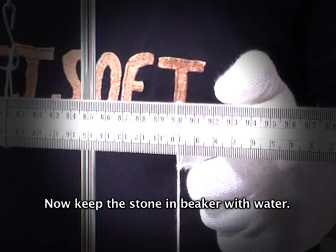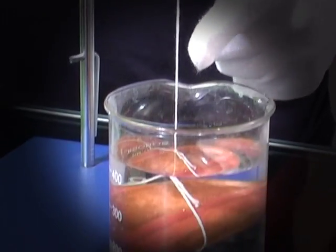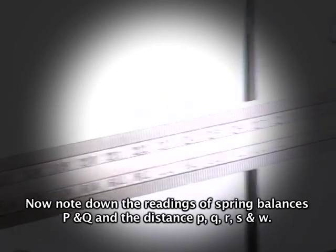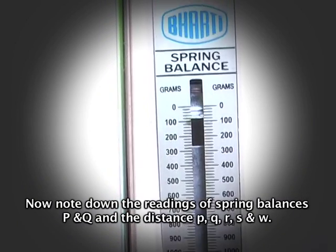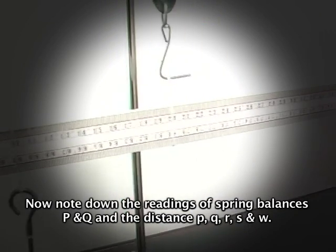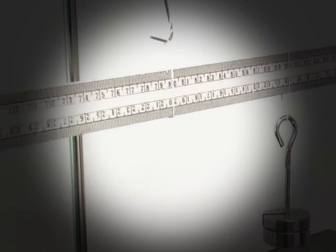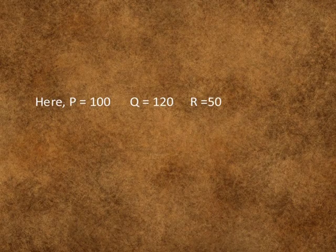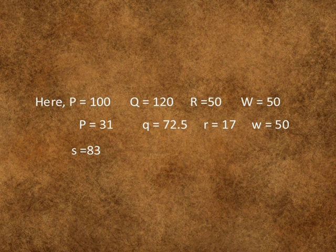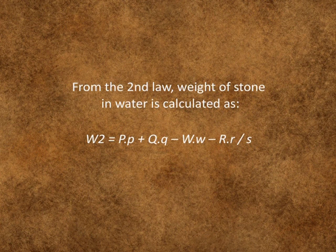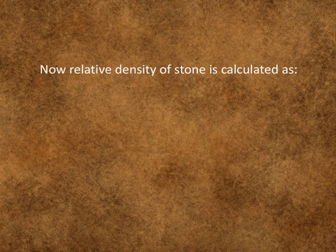Now keep the stone in a beaker with water. Note down the readings of spring balances P and Q, and the distances P, Q, R, S and W on the scale.